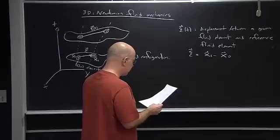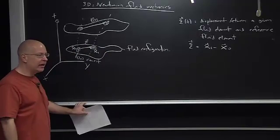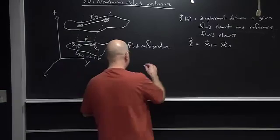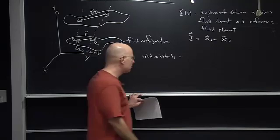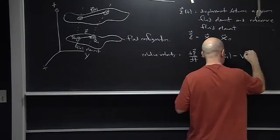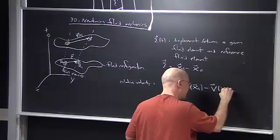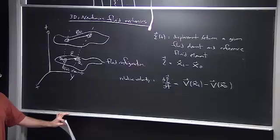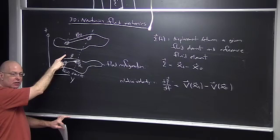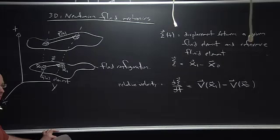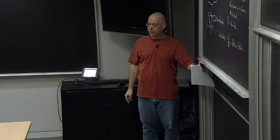A question I can ask is: what is the relative velocity between the fluid elements? Clearly it's the time derivative of the displacement vector. It's the velocity field evaluated at x1 minus the velocity field evaluated at x0. By velocity field I mean that if I pick a fluid element and track it, I know it's moving with some speed in some direction — so for each point in the fluid I have a velocity vector that varies with spatial position and time.